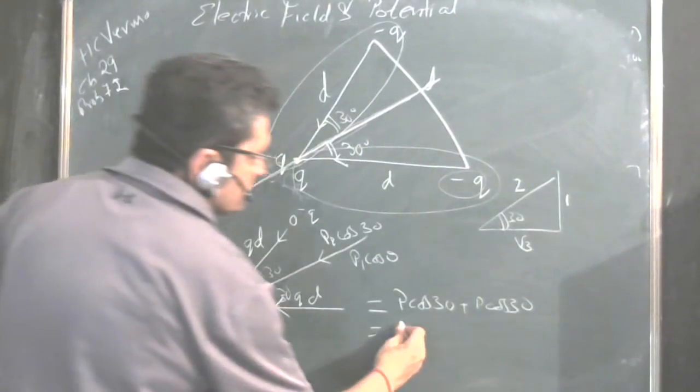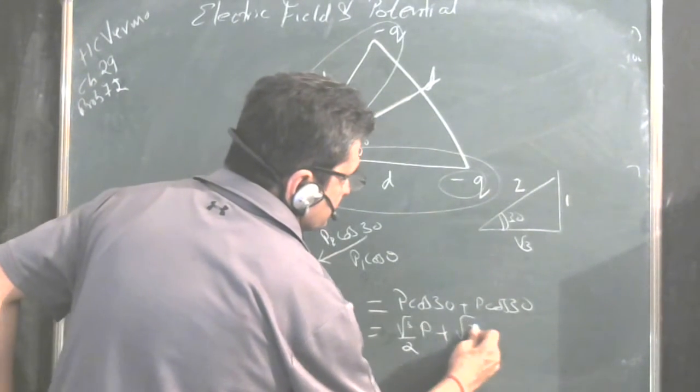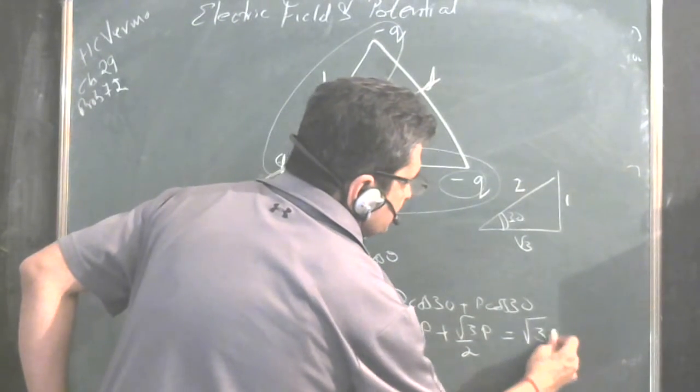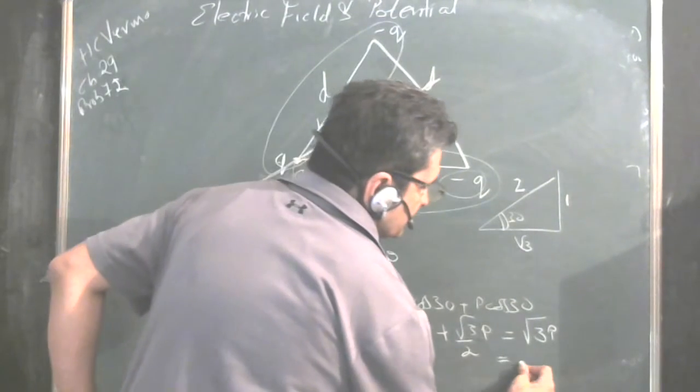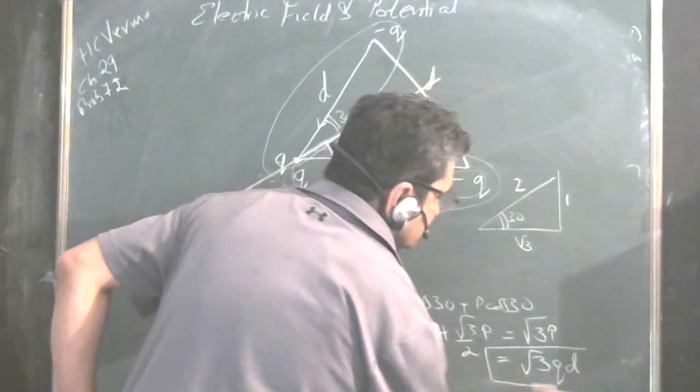So this will be root 3 upon 2 into P plus root 3 upon 2 into P, which means root 3 P. And what is the value of P? It is Q times D. So it is root 3 Q D. This is the answer.